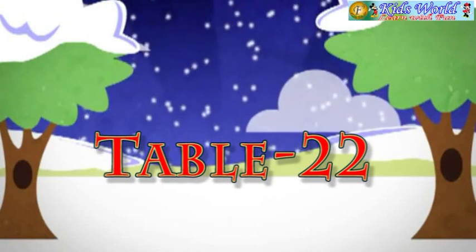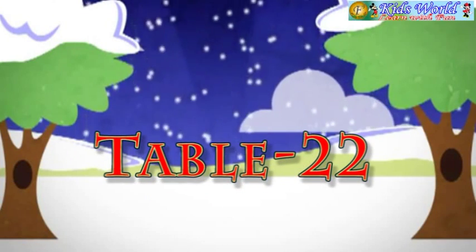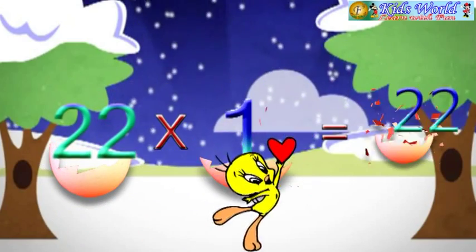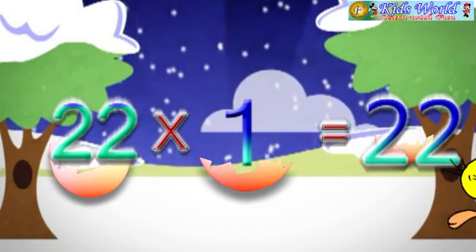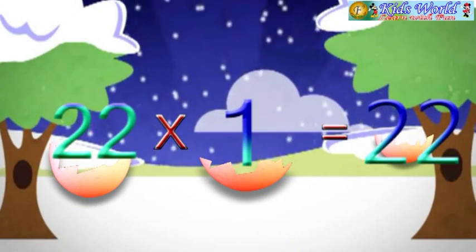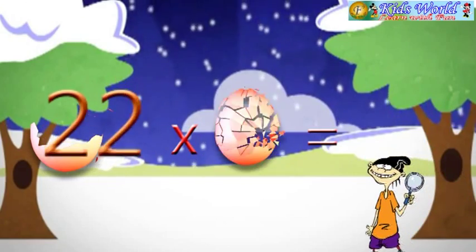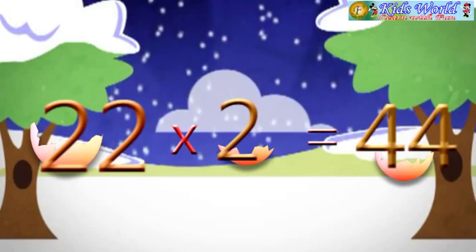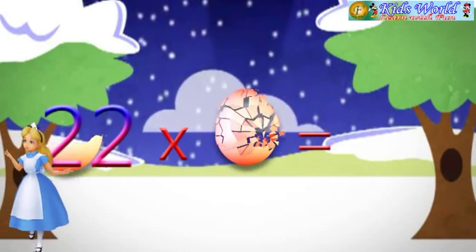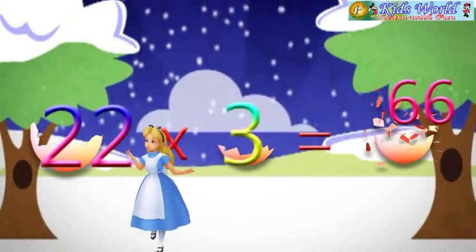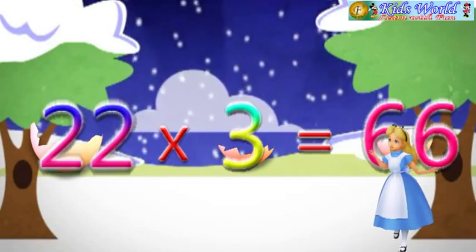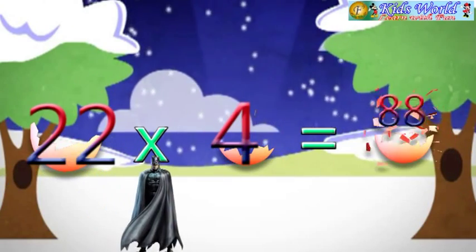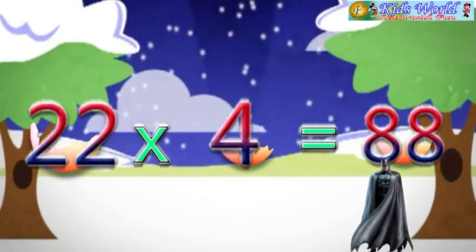Table 22. 22 into 1 is equal to 22. 22 into 2 is equal to 44. 22 into 3 is equal to 66. 22 into 4 is equal to 88.